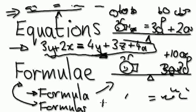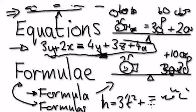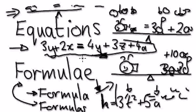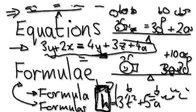A formula is when you have, let's say, h equals 3t squared plus 5a. You can have as many things as you want on the right-hand side, as long as the left-hand side has only one thing — so it's one h equals something. In a formula, you can only have one thing equals something.